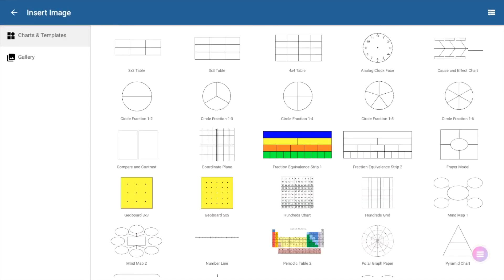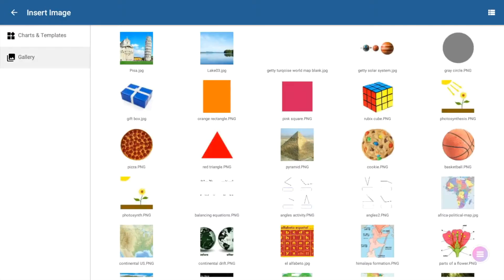To create a quick activity, you may want to start with a template or image. Tap insert image from the toolbar, choose from charts and templates, or go to gallery to access images you have downloaded from Google Drive, another application, or from a connected flash drive.